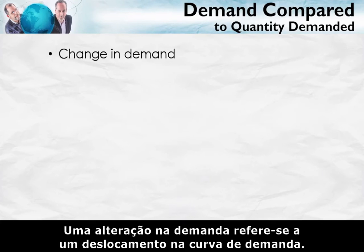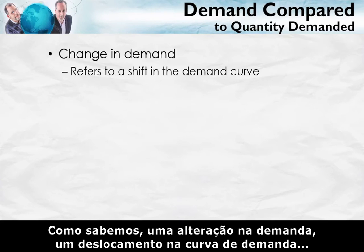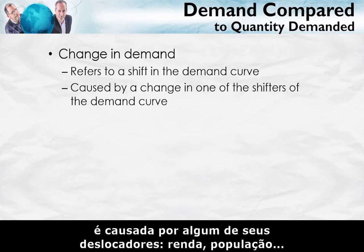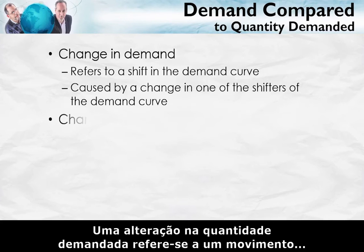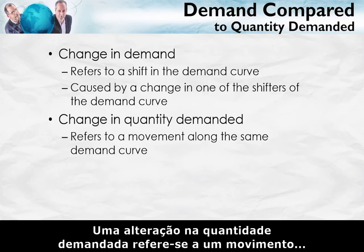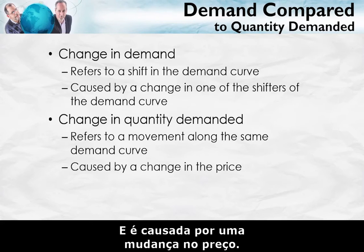A change in demand refers to a shift in the demand curve. A change in demand — a shift in the demand curve — is caused by one of the shifters: income, population, changes in the prices of substitutes and complements, and so forth. A change in quantity demanded refers to a movement along a fixed demand curve, and that's caused by a change in price.